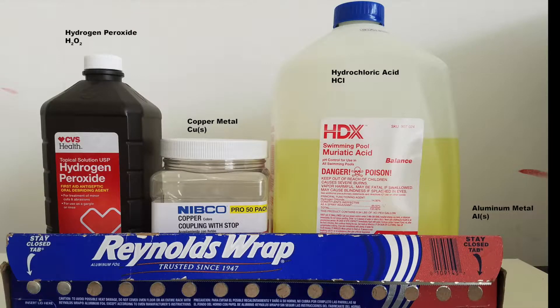To create a copper chloride solution, I used standard 3% hydrogen peroxide and hydrochloric acid. I found the hydrochloric acid at a hardware store that was in the form of a pH control solution for pools.